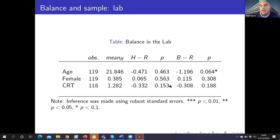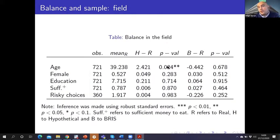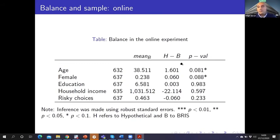This is the balance check in the lab. We can see there is no difference between the hypothetical and the real groups, and also no difference between the BRIST and the real groups. There is only a marginal significant difference here, but when we correct the p-value using the Bonferroni method, this difference is no longer significant. The same holds for the field. So in the lab and in the field, the three treatments are balanced. In the online experiment, the hypothetical and the BRIST treatment are also balanced, with marginal differences disappearing after Bonferroni correction.